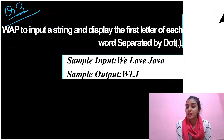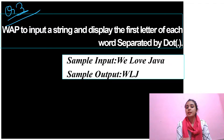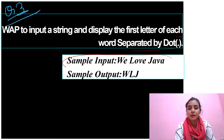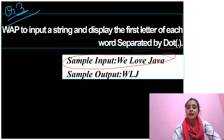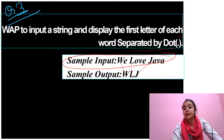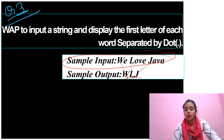Hey guys, this is Lavjeet Arora, welcome to the Taquin channel. Here we are going to start question number three: write a program to input a string and display the first letter of each word separated by a dot. The sample input is 'We Love Java', and we want just the first letter of each word separated by a dot.